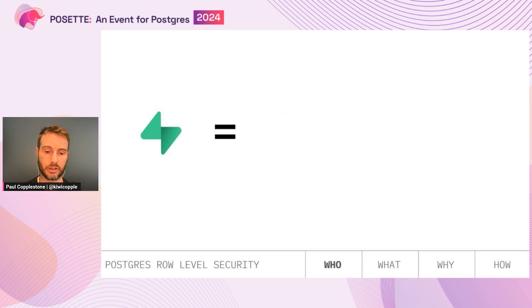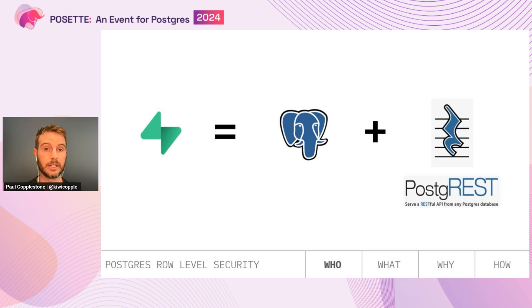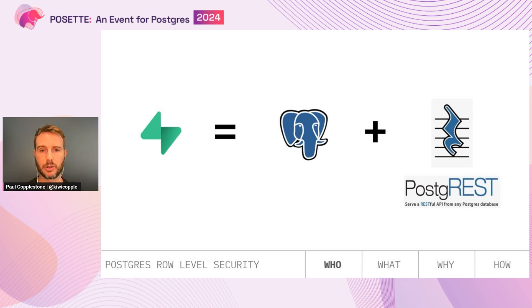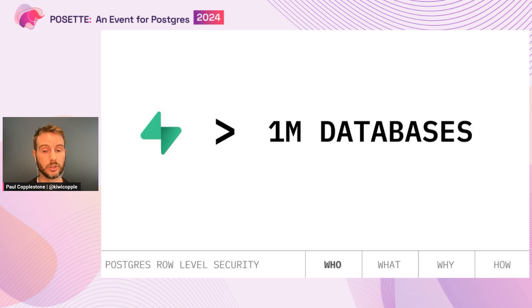Supabase is a Postgres hosting company, and we also host a bunch of tools that make it really easy to use Postgres. In particular there is a tool called PostgREST — a really cool open source project that helps you serve a RESTful API on top of any Postgres database by automatically translating the database schema. PostgREST leverages Postgres heavily including the role system and Row Level Security, and this is why we've become very familiar with RLS over the past four years. We've now hosted and launched over a million Postgres databases.